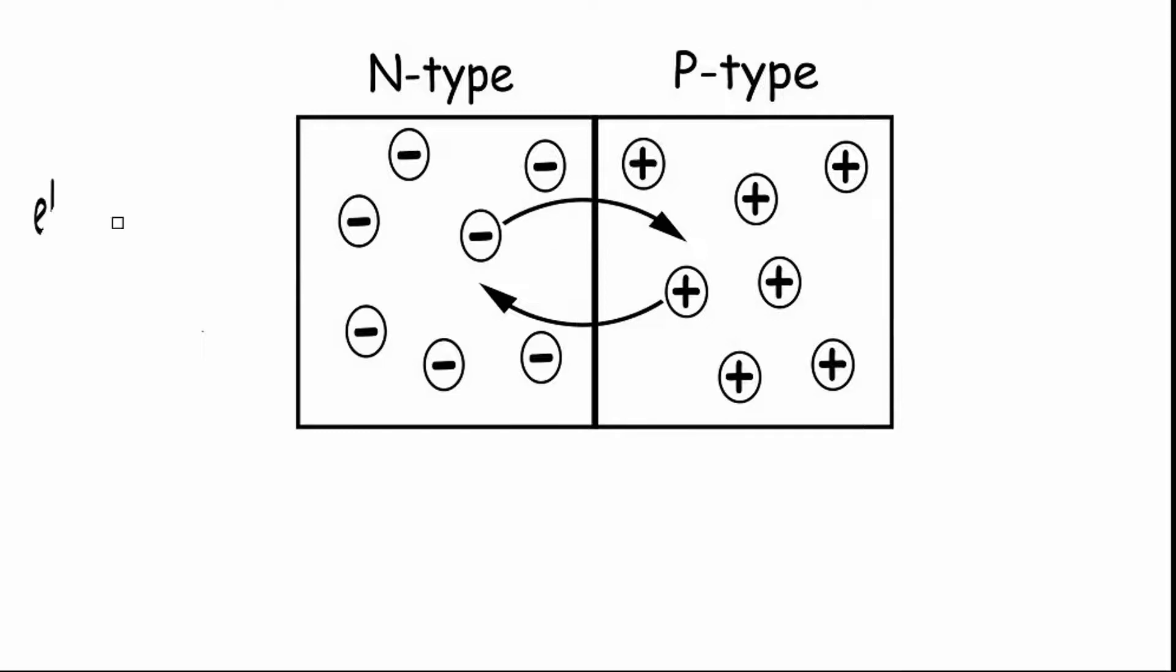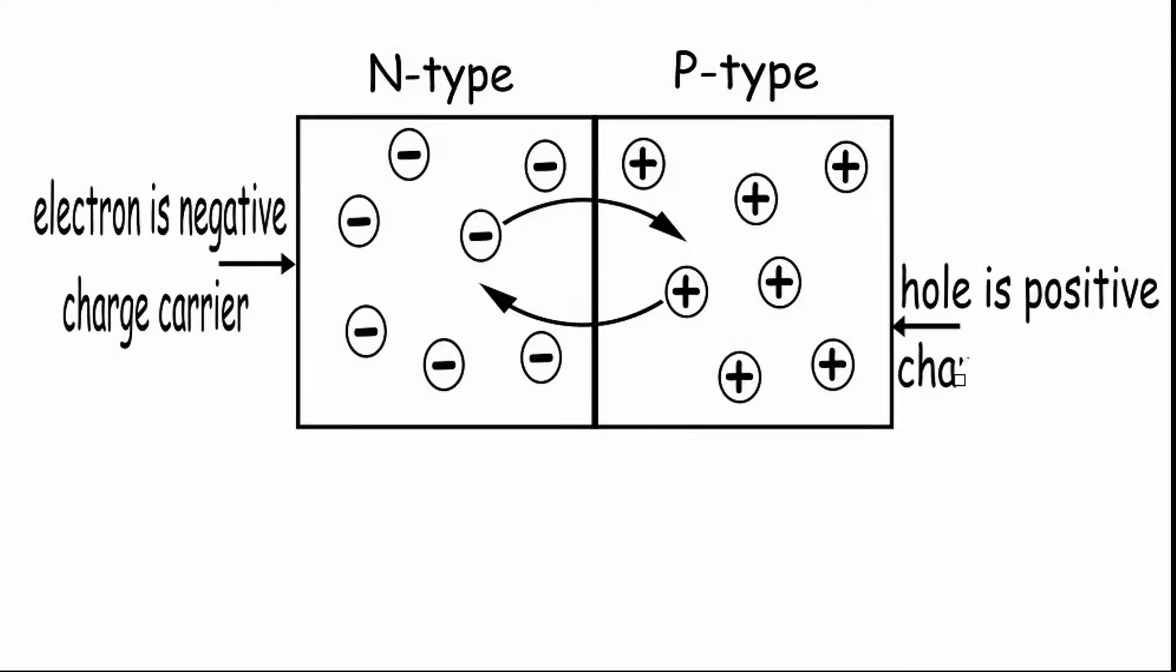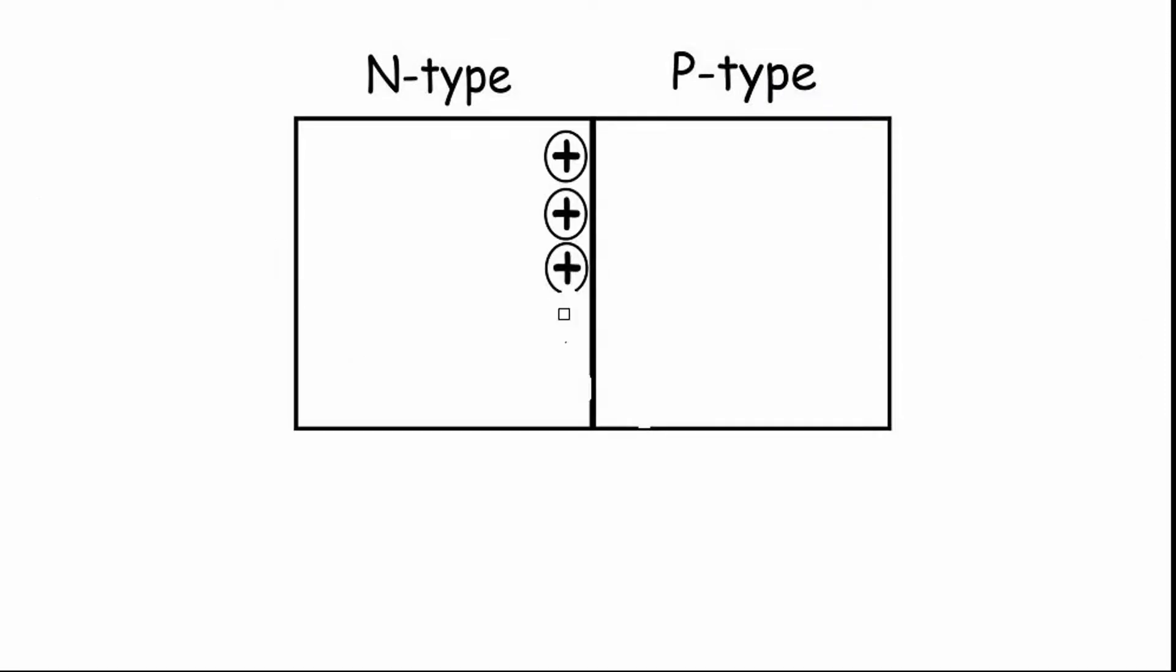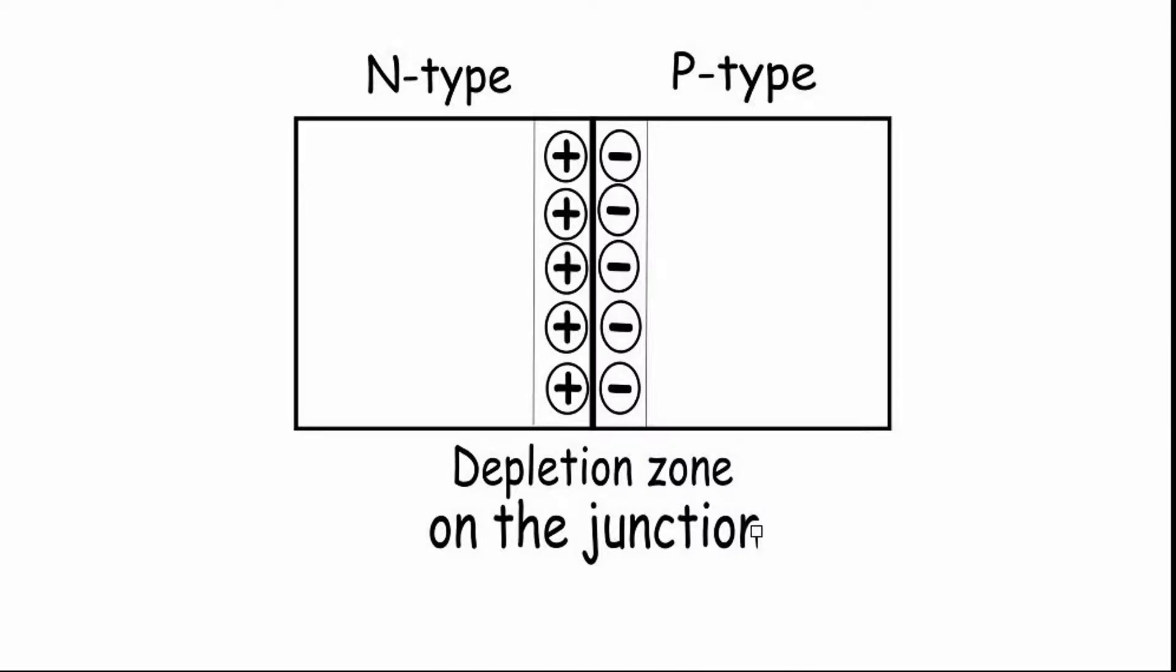The electrons diffuse from N-side to P-side, and holes diffuse from P-side to N-side through the junction. This creates a depletion zone on the junction which acts as a barrier, creating positive ions on the N-side and negative ions on the P-side.